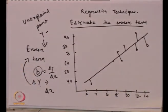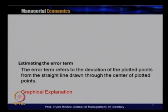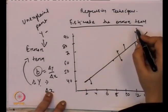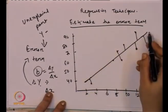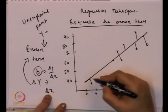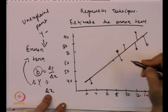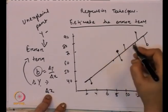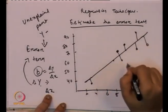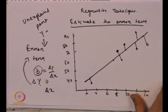The error term refers to the deviation of the plotted point from the straight line drawn through the center of the plotted points — that is why we call it the regression line. The error term is basically the deviation between the actual data point and this line. Whenever there is a deviation between the actual data point and the regression line — the line from the center of the data points — that gives us the error term.